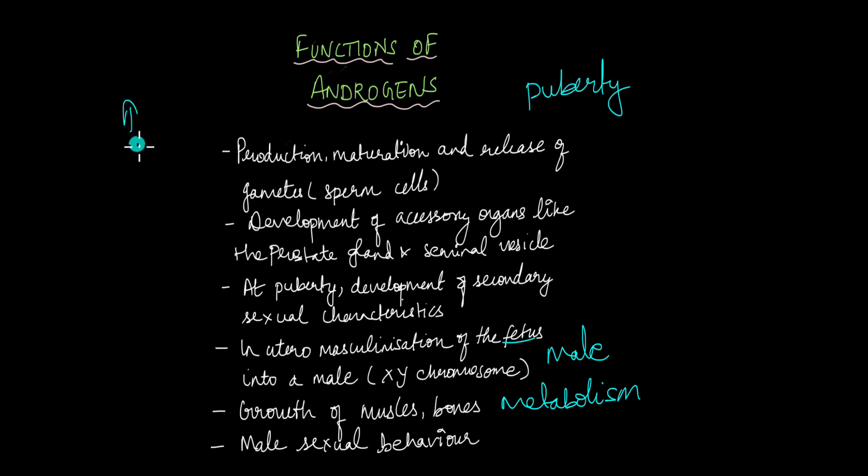At the onset of puberty, that's when their levels begin to increase in the male body and at that time because of the high levels of these androgens, that causes the production, maturation and release of the sperm cells. I told you about spermatocytes, right, which are the early sperm cells that are present inside the testis. So these spermatocytes begin to mature and finally develop into mature sperm. This developmental process entirely is governed by these androgens.